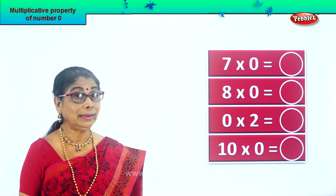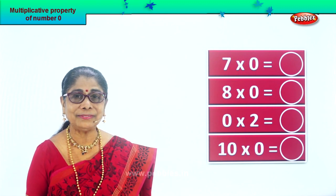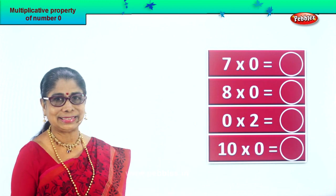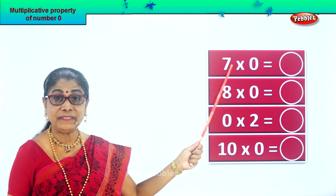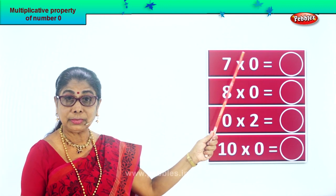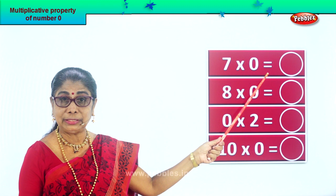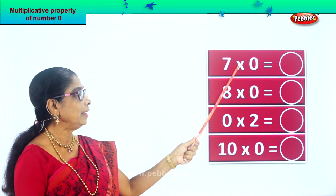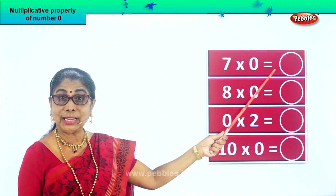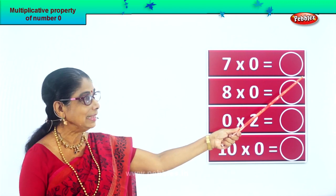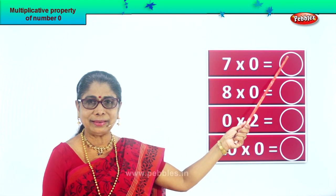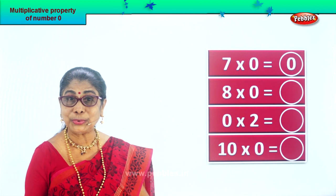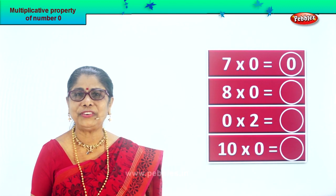We are learning Multiplicative Property of Zero. Now let's enjoy this exercise together. Seven into zero — seven multiplied by zero is equal to what? You should give me the answer. Seven into zero is equal to — good — zero. So we write over here zero. Seven multiplied by zero is equal to zero, very good.